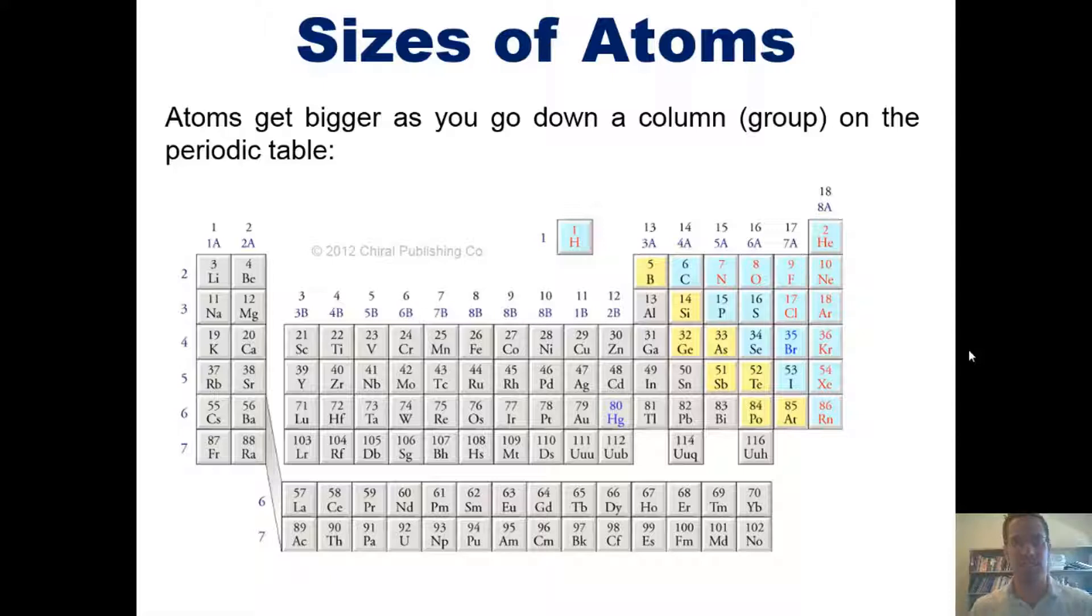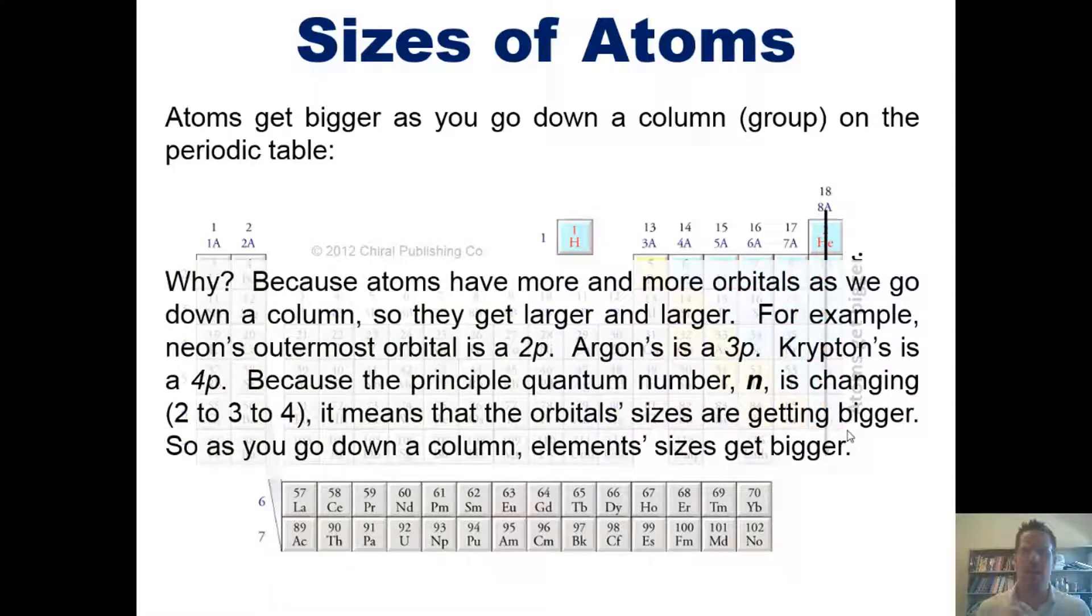Anyway, with that said, let's get started. As it turns out, atoms get bigger as you go down a column or a group on the periodic table. Why? Because atoms have more and more orbitals and more and more electrons as you go down, hence they get larger and larger.